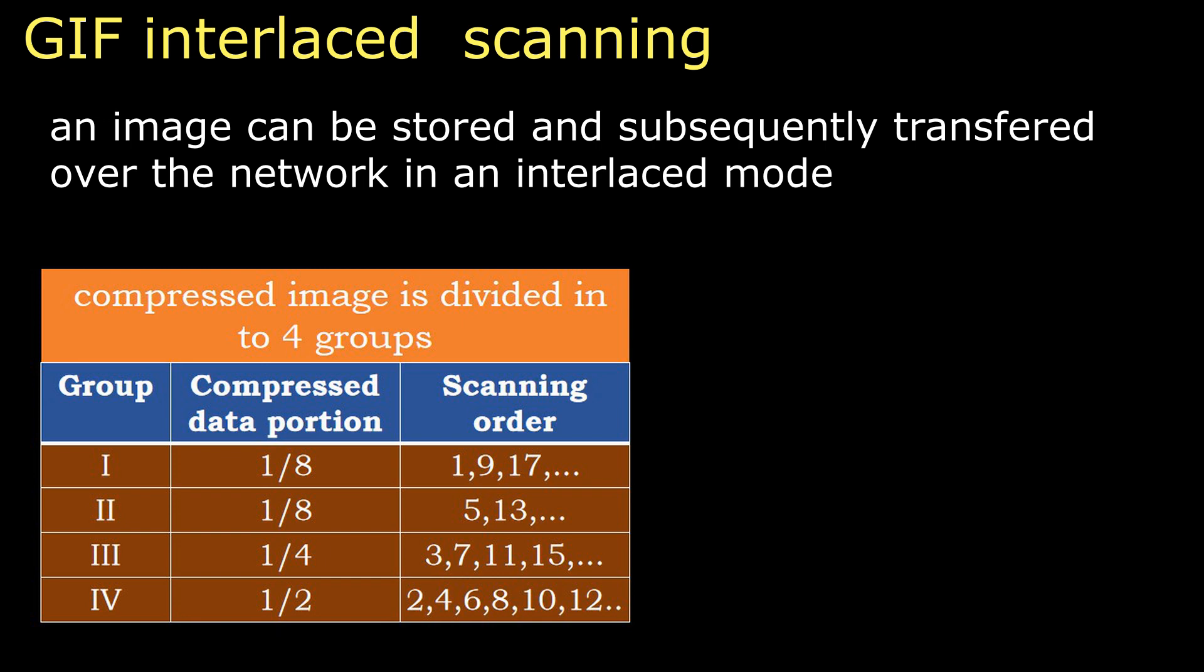Group 4 data consists of half of the compressed data portion. Therefore, the first line scanned is 2. Then the next line scanned is 2 plus 2, 4. Then 4 plus 2, 6. Then 8, 10, 12, and it goes up to n.